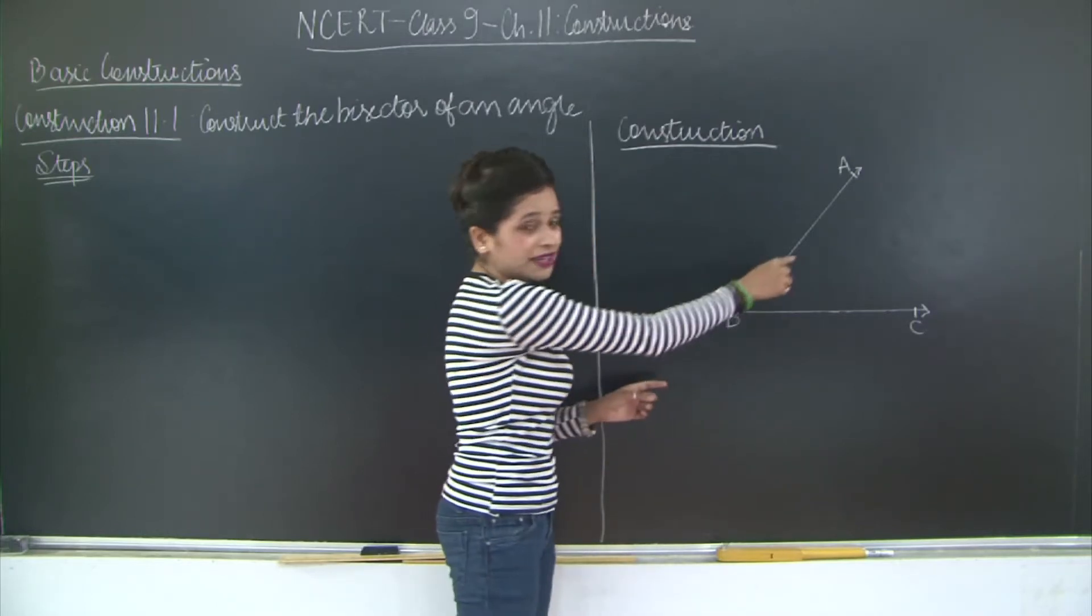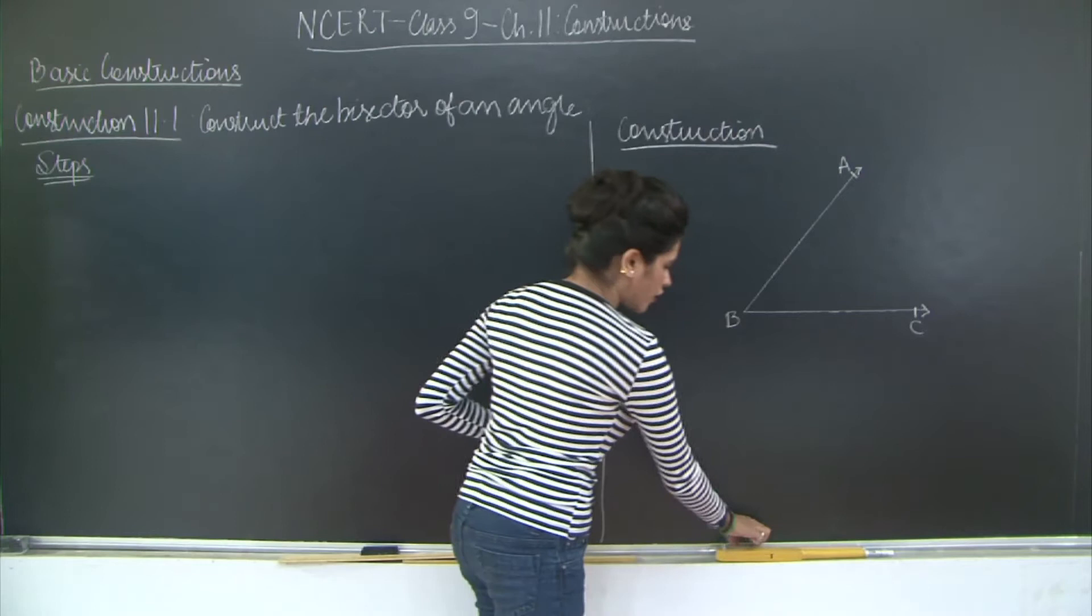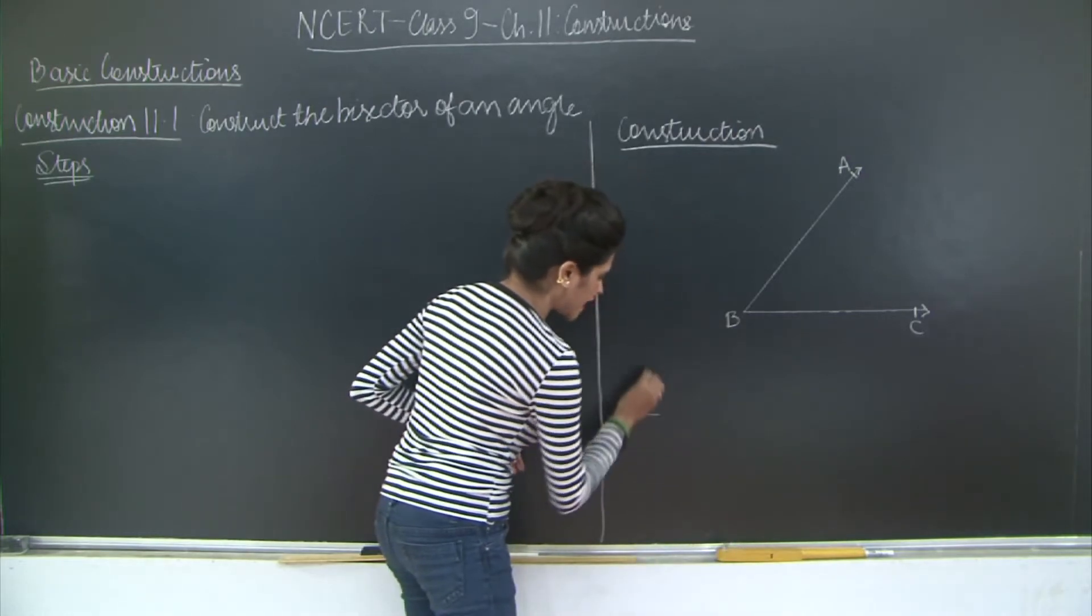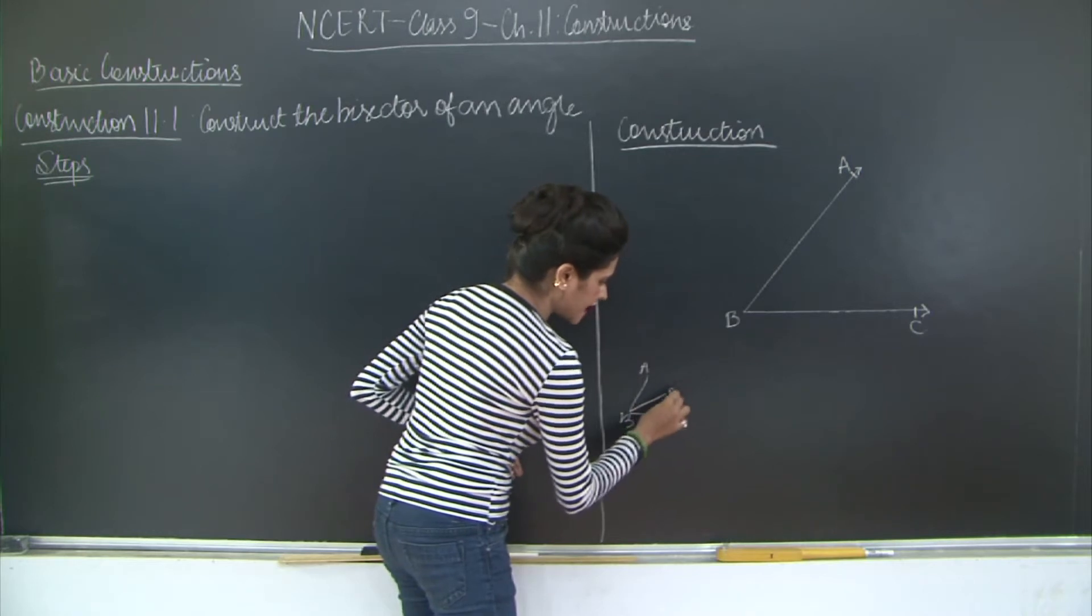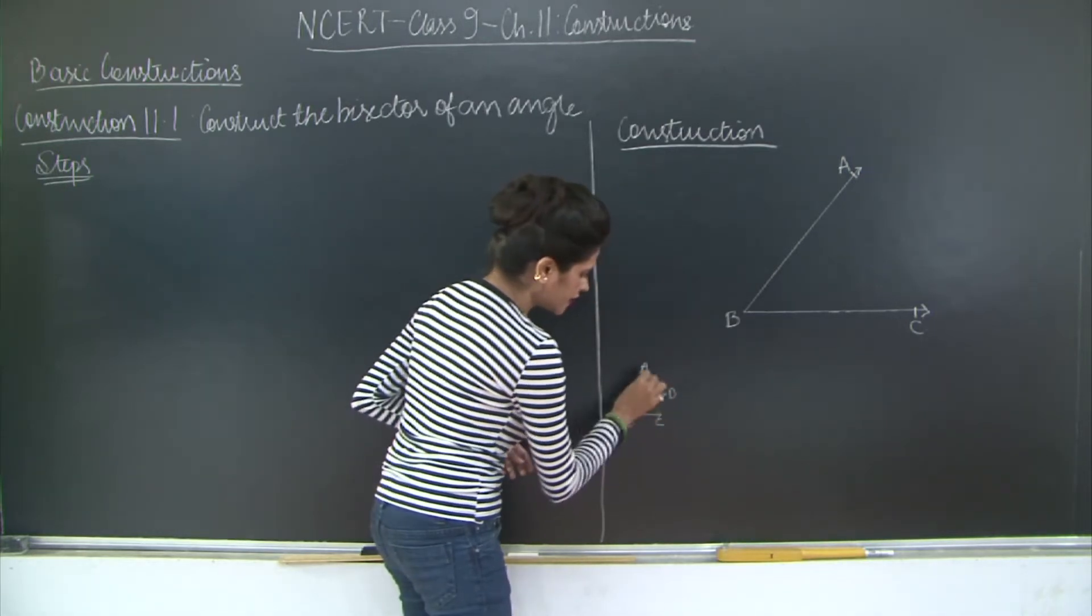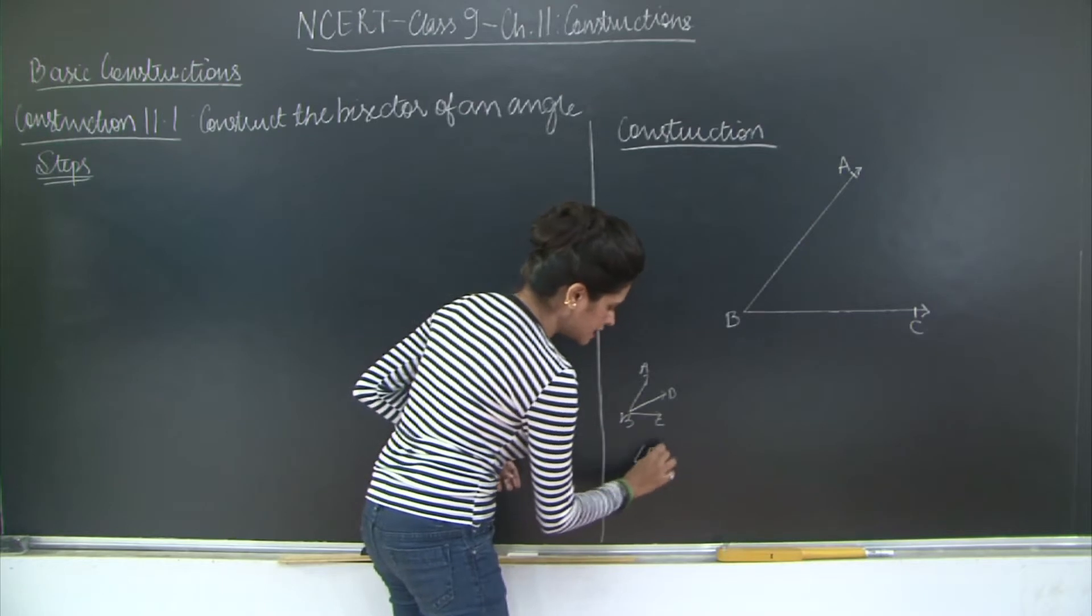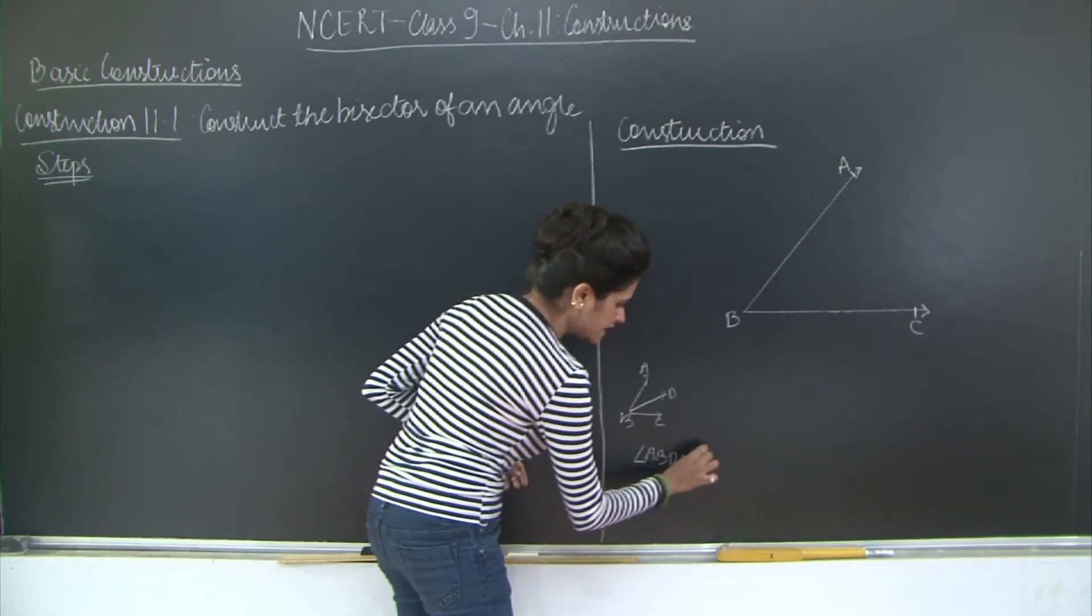We need to draw a ray through B such that if I draw a ray like this, if suppose this is my angle ABC then I need to draw this line, let us say ray BD such that angle ABD is equal to angle CBD.